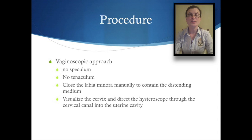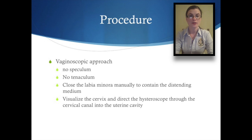The cervix can be visualised with the hysteroscope, and the hysteroscope can be directed into the external os of the cervix, into the endocervical canal, and advanced slowly into the uterine cavity.